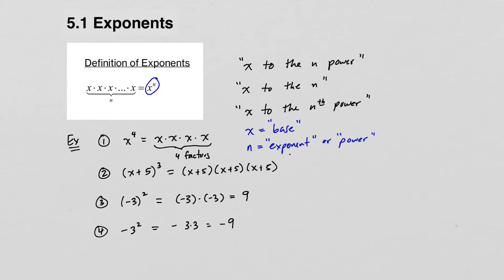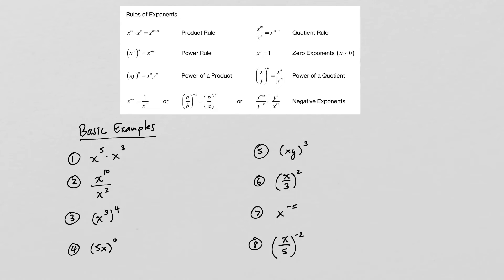Let's look at some rules of exponents now. The first one is the product rule: if you have the same base x, then x to the m power times x to the n power is x to the m plus n power. The next one is the quotient rule, which is very similar, except that now we are dividing x to the m power by x to the n power. When you divide, you subtract the exponents — you take the top power minus the bottom power.